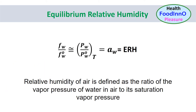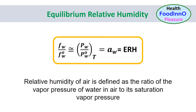When vapor and temperature equilibrium are obtained, the water activity of the sample is equal to the relative humidity of the air surrounding the sample in an airtight chamber. Relative humidity of air is defined as the ratio of the vapor pressure of water in air to its saturation vapor pressure — that is, the water content in air relative to its maximum water-holding capacity.